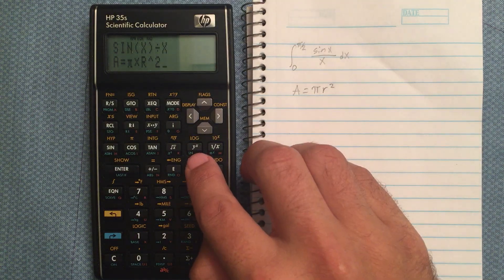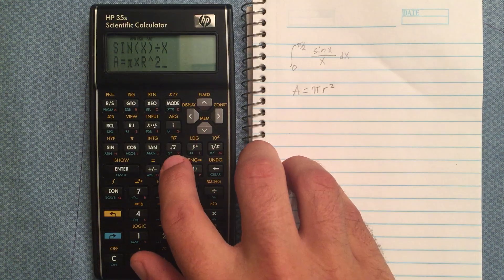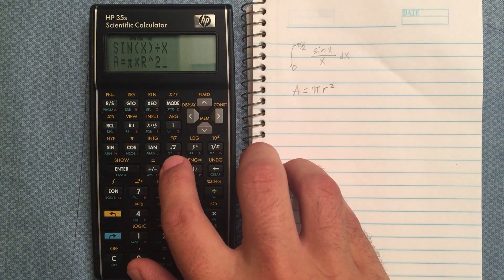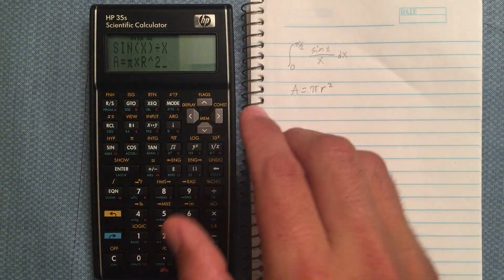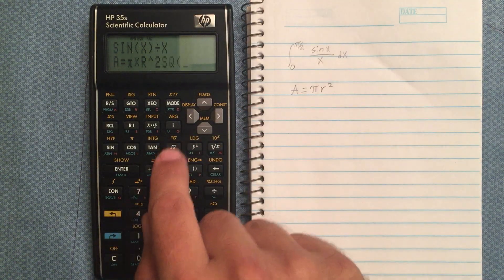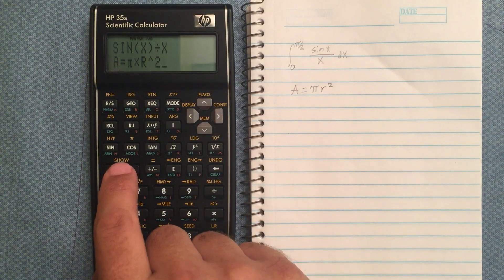The y to the x button puts in the caret symbol, whereas the x squared, blue shift x squared, just puts in that symbol. So I prefer to use the y to the x when entering in numbers like that.